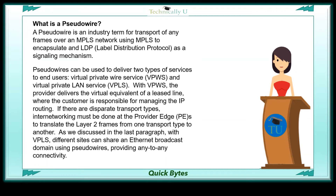Pseudowires can be used to deliver two types of services to end users: virtual private wire service, VPWS, and virtual private LAN service, VPLS.